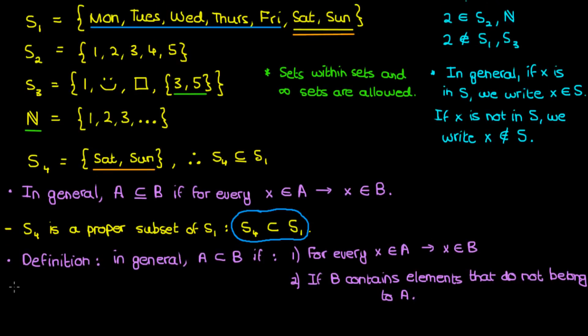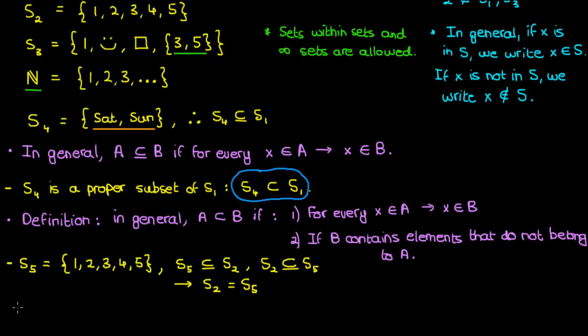And finally what if I made a set S5 consisting of the natural numbers from 1 to 5? Well in that case we can say that S5 is a subset of S2 because all the elements in S5 are found in S2, but then we can also say that S2 is a subset of S5 because again all the elements in S2 are found in S5. As a result we would say that S2 and S5 are equal to each other because they contain the exact same elements.